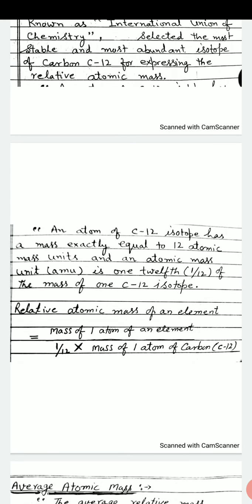An atom of carbon 12 isotope has a mass exactly equal to 12 atomic mass unit.